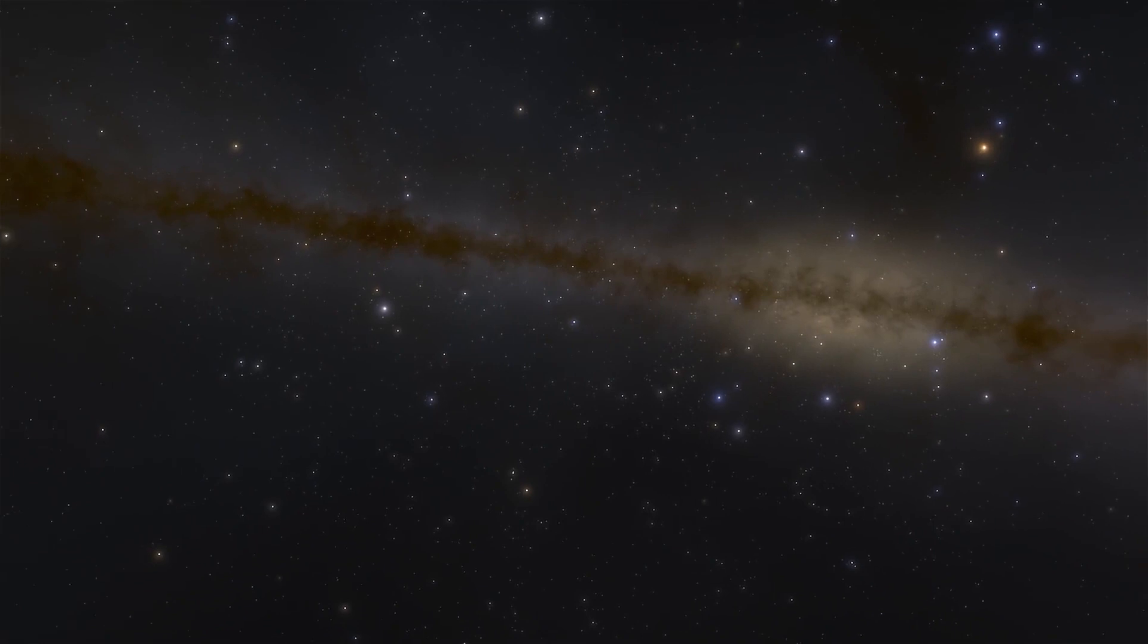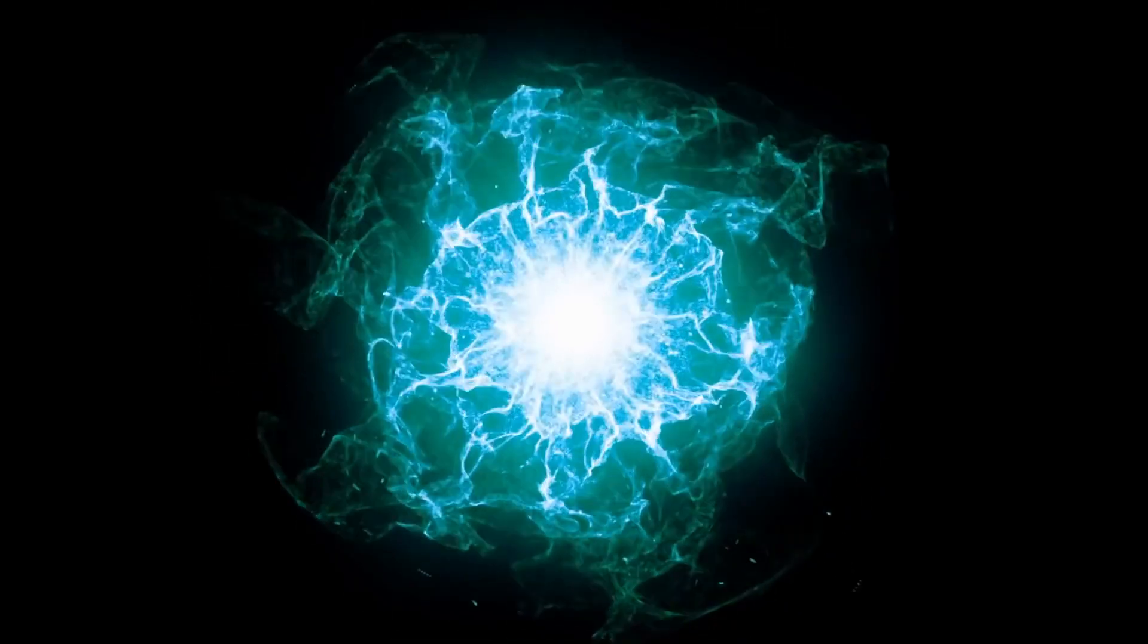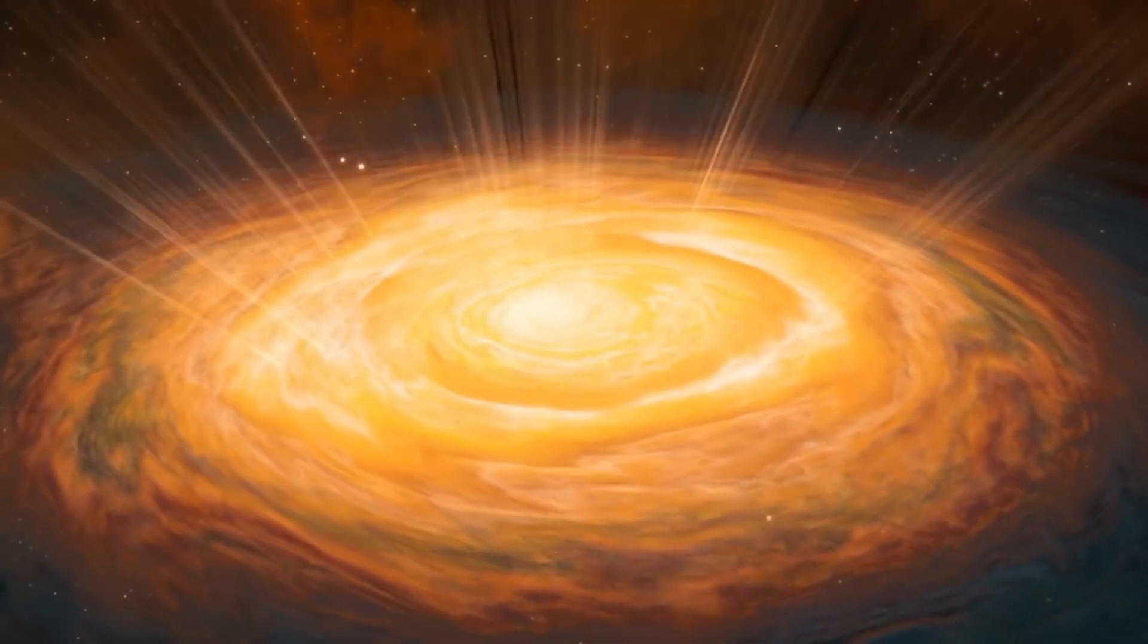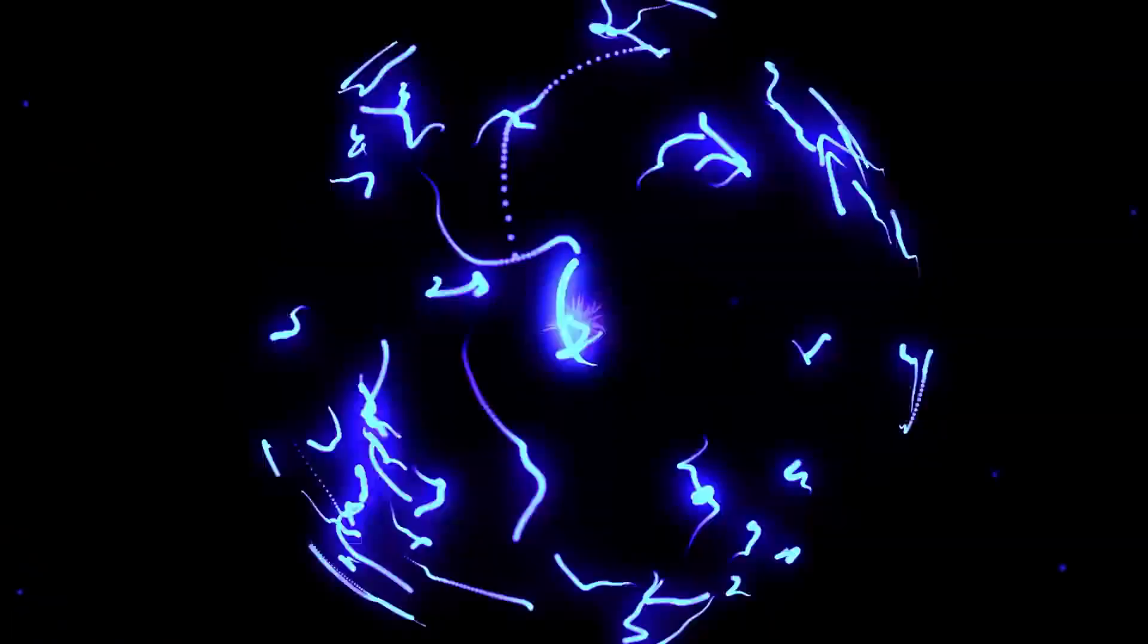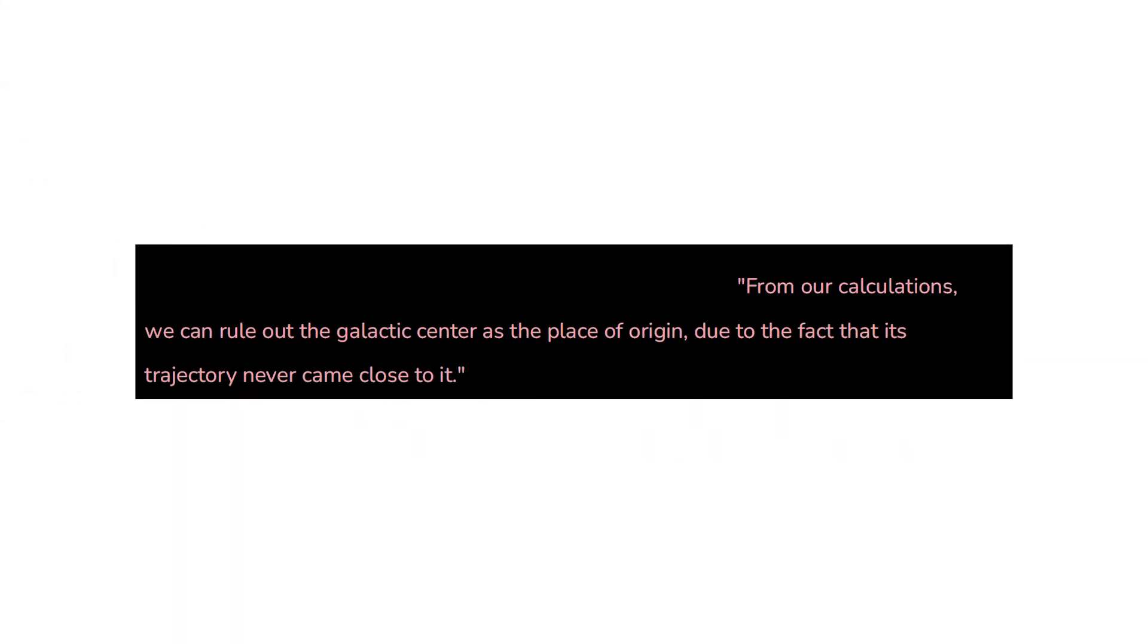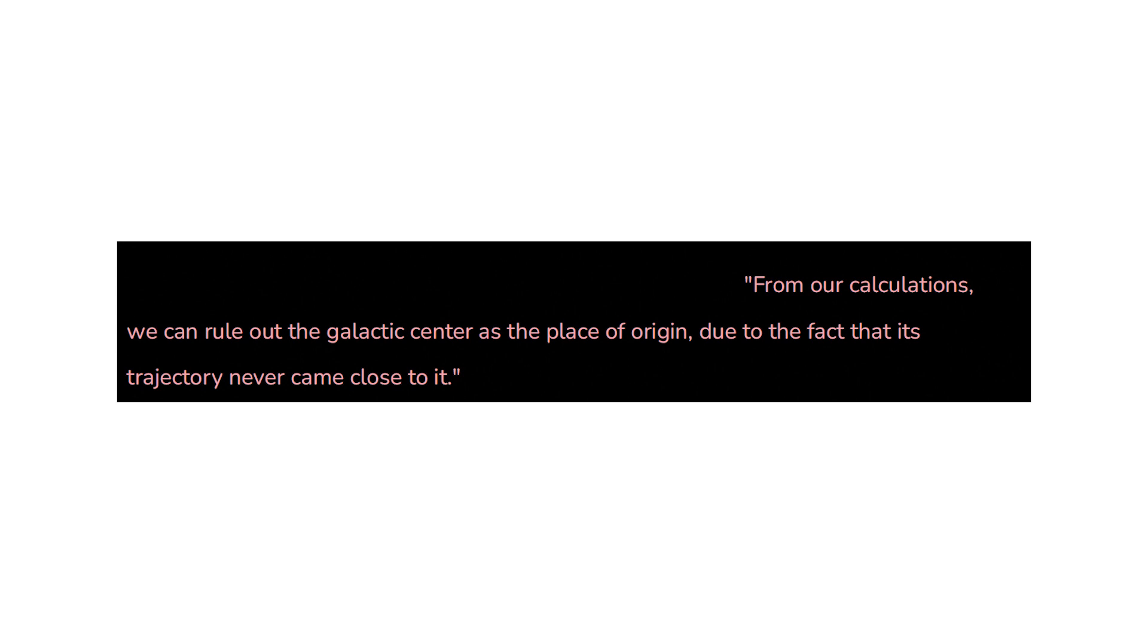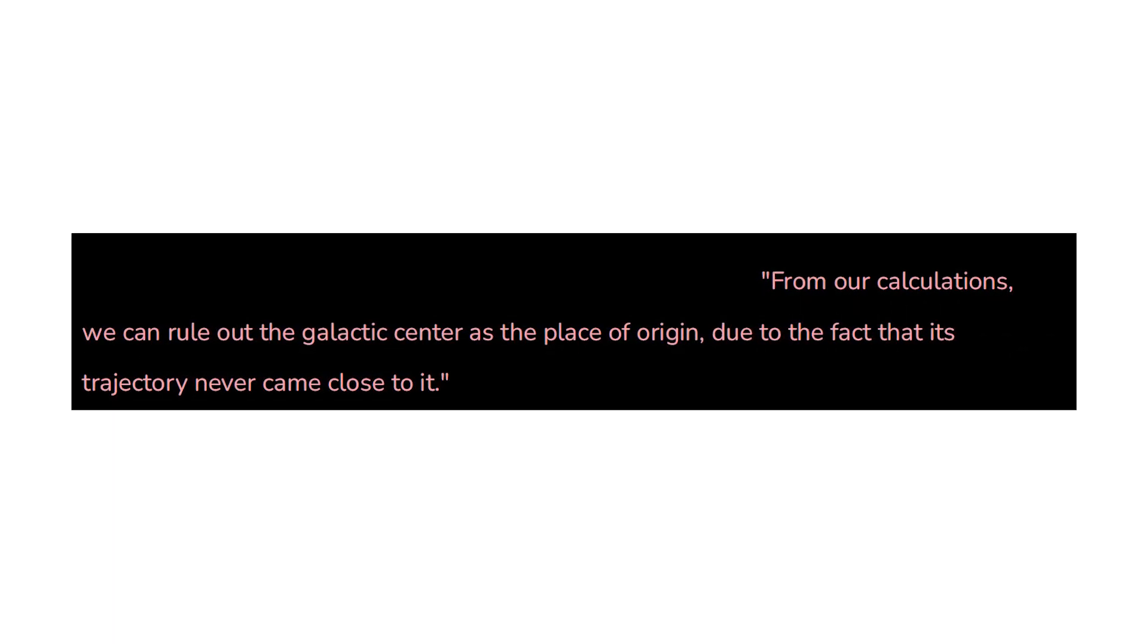They were also successful in tracing its path, which led them to the conclusion that the object could not have come from the center of the Milky Way. This indicates that it was not propelled in its current direction by a supermassive black hole. According to one of the researchers on the team, Eva Ziegler, from our calculations, we can rule out the galactic center as the place of origin due to the fact that its trajectory never came close to it.